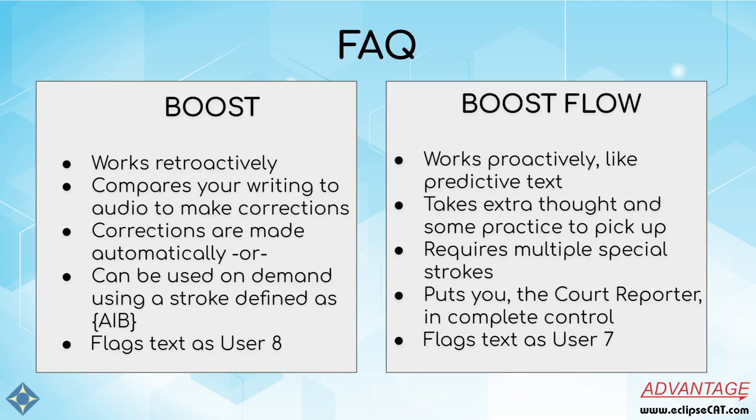If you're using Boost on demand, you can use a stroke defined as open curly bracket, capital AIB, close curly bracket to induce Boost when you need a little help. If someone says something that you know you're not going to be able to stroke out, you can instead hit your AIB stroke and Boost will come in and help you in that space — and that space only.